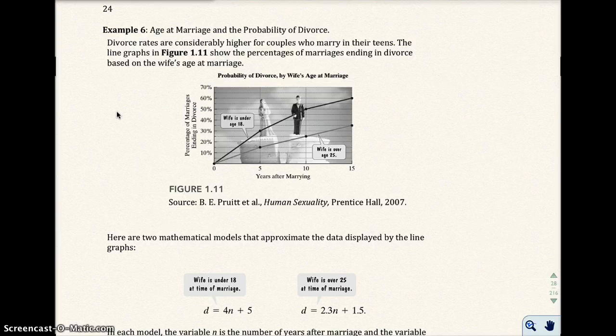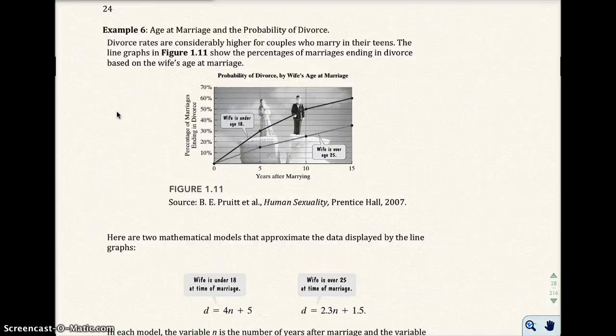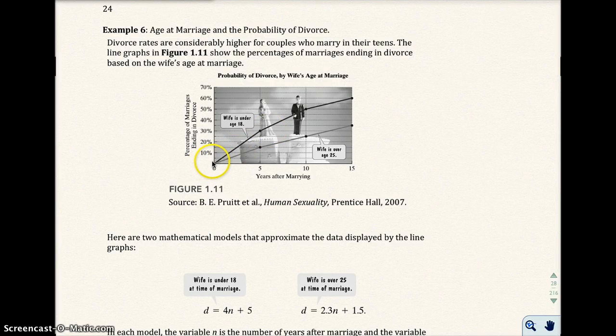Okay, so example six has a real-life example and this was done in 2007. It talks about the age of marriage and the probability of divorce. So it says divorce rates are considerably higher for couples who marry in the teens. The line graph in figure 1.11 shows the percentage of marriages ending in divorce based on the wife's age of marriage. Okay, so here we have if the wife is under 18, there's the probability of the marriage ending in divorce. That's how many years after they marry. And the wife is over 25, and then the number of years after marrying them.